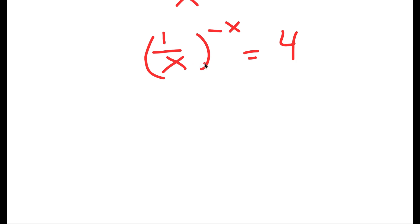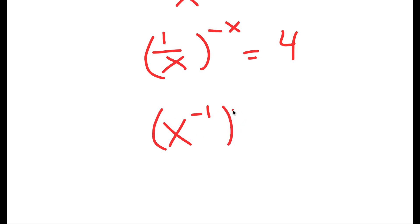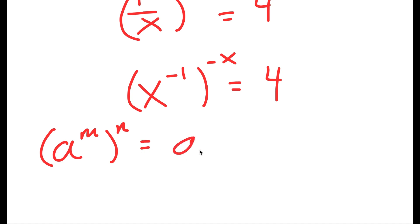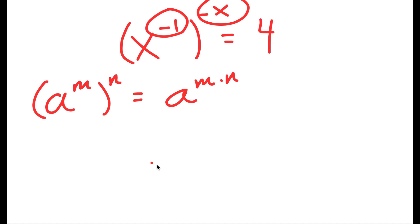And 1 over x is the same thing as x to the power of negative 1, because any number to the power of negative 1 is 1 over that same number. So now I have x to the power of negative 1, to the power of negative x, is equal to 4. And if I have something in the form a to the power of m to the power of n, this equals a to the power of m times n. So these two multiply and I get x to the power of positive x is equal to 4.